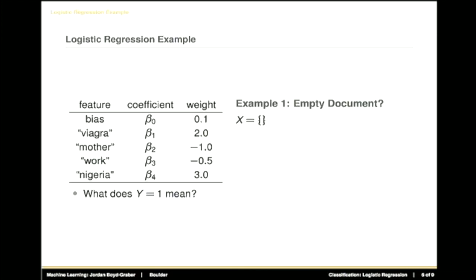So let's take an example where we want to do spam classification. Given the formula that we had before and these weight vectors, let's classify some documents as either being spam or not. So the first question, what does Y = 1 mean? That the document is spam. Exactly. And conversely, Y = 0 means ham. Spam versus ham.